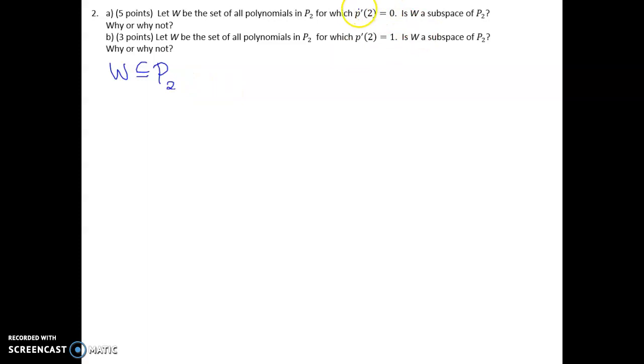So what's critical is that you take into account this added condition. So this is what makes W a subset. We're not talking about all of P2. We're talking specifically about the polynomials degree 2 or lower in part A, where the derivative of the polynomial at 2 is equal to 0.